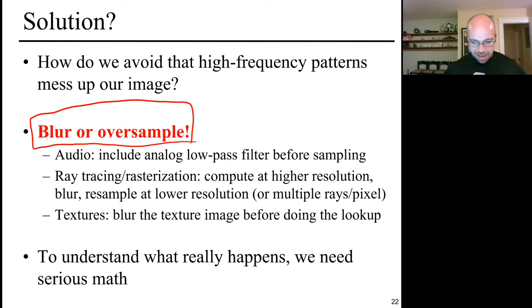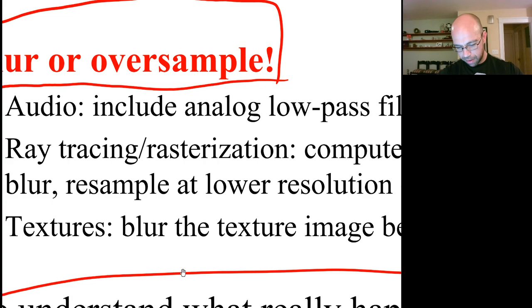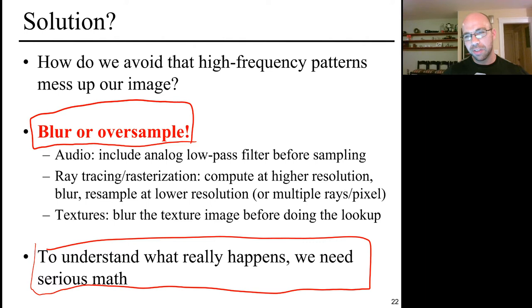When you undersample, you see some weird alias or ghost of the original high frequency signal you wanted to display. So what's the solution? The big takeaway from today's lecture is that your options are to oversample or blur things out. Maybe undersampling a checkerboard and getting a random pattern of black and white pixels is less preferable to blurring and just getting one gray region. Neither one is a checkerboard, but at least we're not seeing these low frequency artifacts appearing by accident. In audio processing, you can apply low-pass filters; in ray tracing and rasterization, multiple rays per pixel can really help; and in textures, we use mipmaps and similar structures.